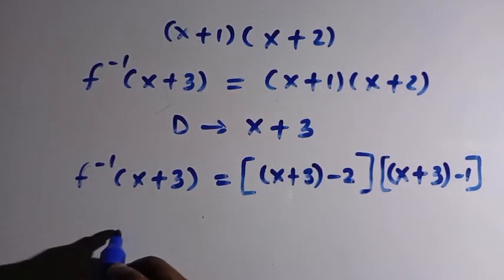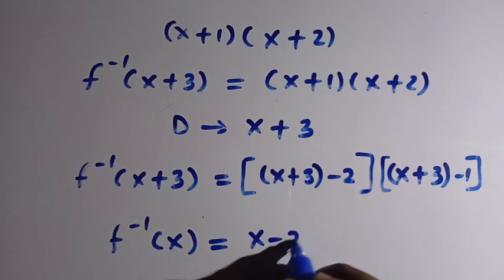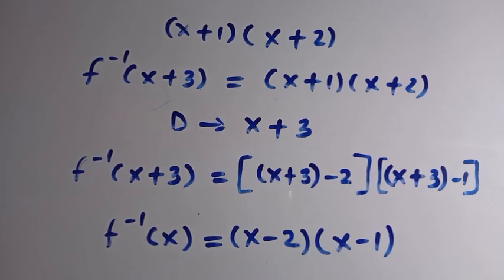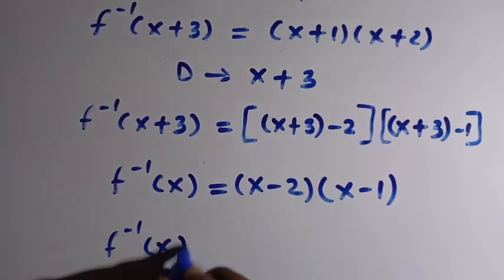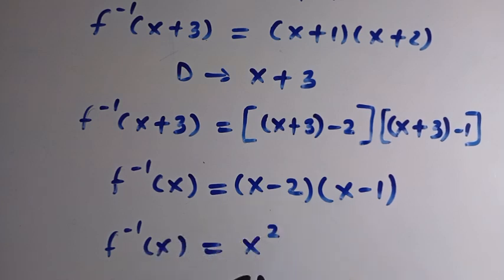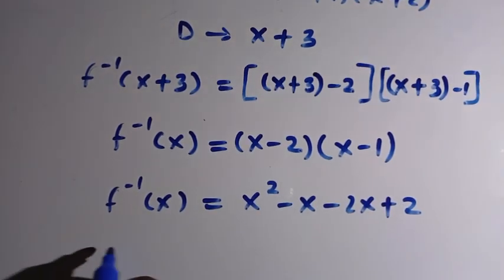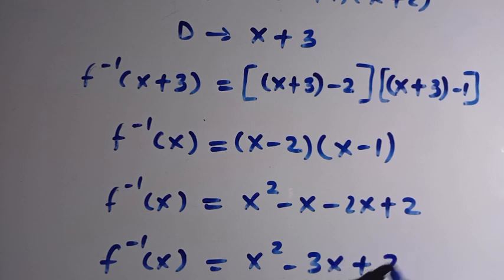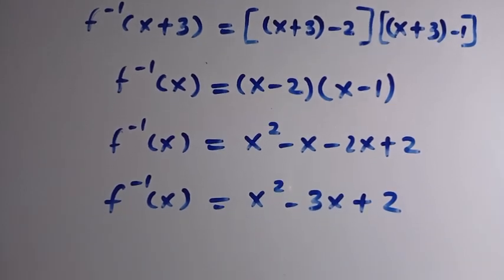After that manipulation, we replace x plus 3 with just x, since we need to find f of x. So f inverse of x equals (x minus 2)(x minus 1). Expanding this gives x squared minus x minus 2x plus 2, which simplifies to f inverse of x equals x squared minus 3x plus 2.